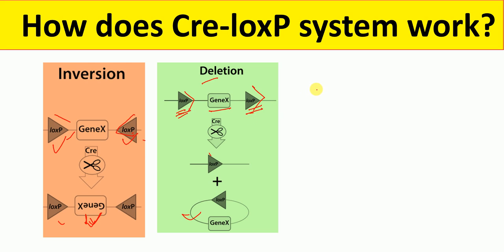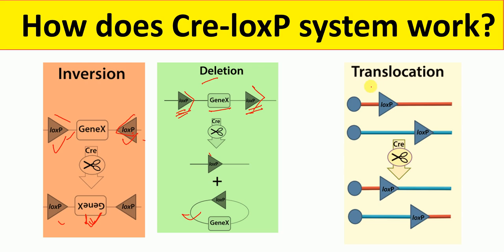The third type of event is translocation. Translocation occurs when the LoxP sites are present on separate DNA molecules. As you can see, the red part is found in both the first and second molecule after recombination, which means there is a translocation. So translocation occurs when the LoxP sites are present on separate DNA molecules.